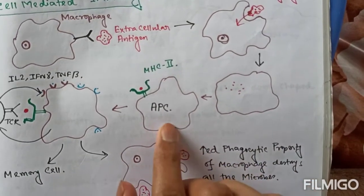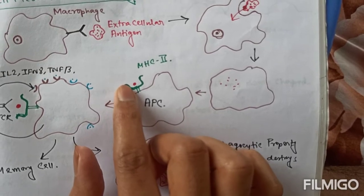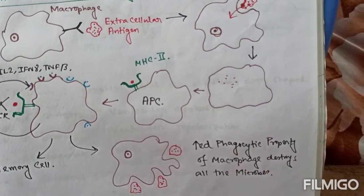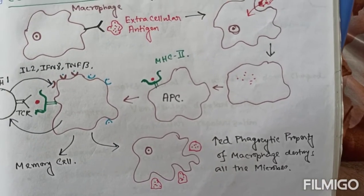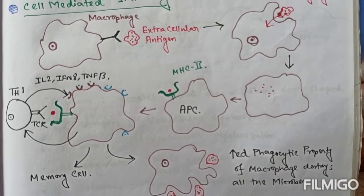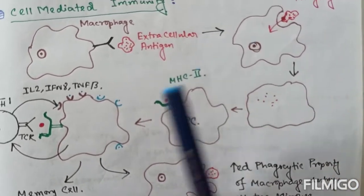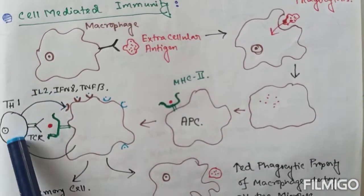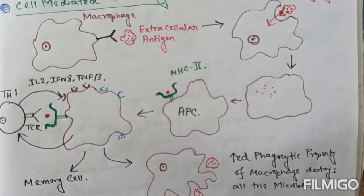And here the macrophage itself act as antigen-presenting cell and present the antigen with the help of MHC type II. And this presentation is forward to the helper T-cell type I here. And there is a cellular communication in between helper T-cell and macrophage.